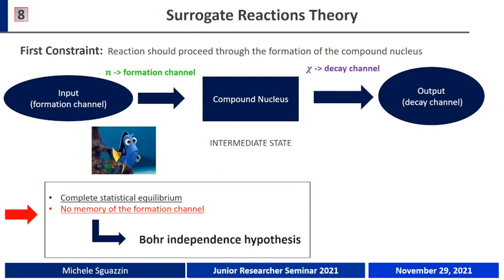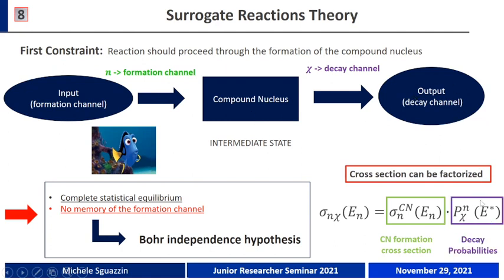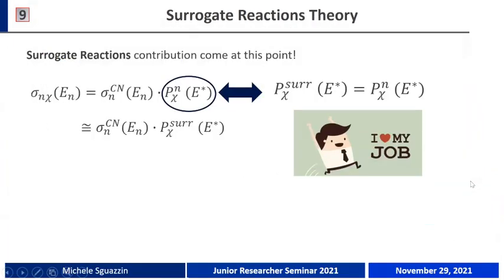This hypothesis is also known as the Bohr independence hypothesis. If we consider this hypothesis, we can factorize the neutron-induced reaction cross-section into two different terms: one related to the formation of the compound nucleus, and a second term related to its decay. In the first approximation, there is no difference between the decay probability measured using the surrogate reaction and the one in the neutron-induced reaction, so we can simply replace one with the other.